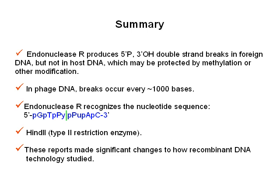In summary, the researchers found that endonuclease R produces a 5' phosphoryl, 3' hydroxyl double-strand break in foreign DNA but not in host DNA, which may be protected by methylation or some other unknown modification. They also found that in phage DNA these breaks occur about every 1,000 bases, which gives some idea of the length of the recognition sequence. They found that endonuclease R recognizes the nucleotide sequence guanine, thymine, pyrimidine, purine, adenine, and cytosine. This endonuclease R is today known as HindII, which is a type 2 restriction enzyme. Altogether, these reports made very significant changes to how recombinant DNA technology is studied today and will be in the future.